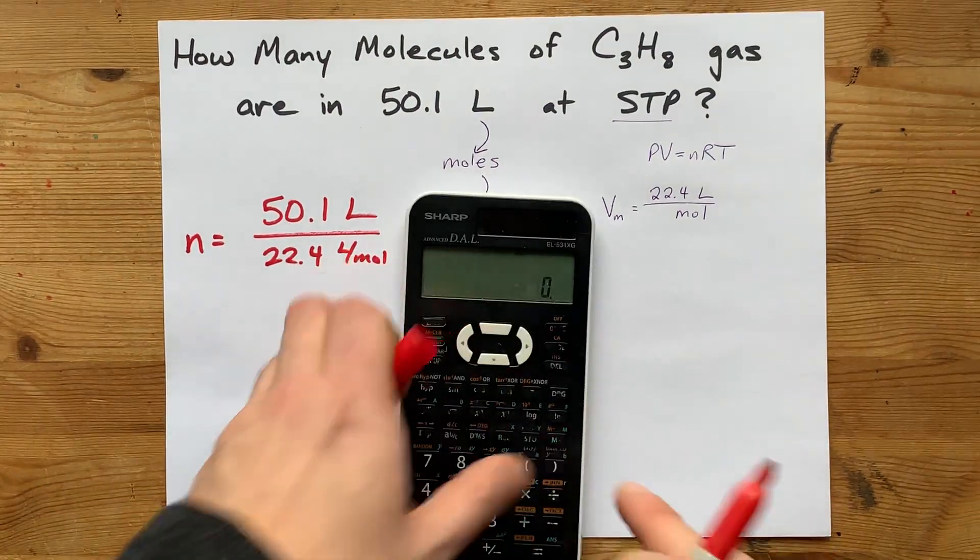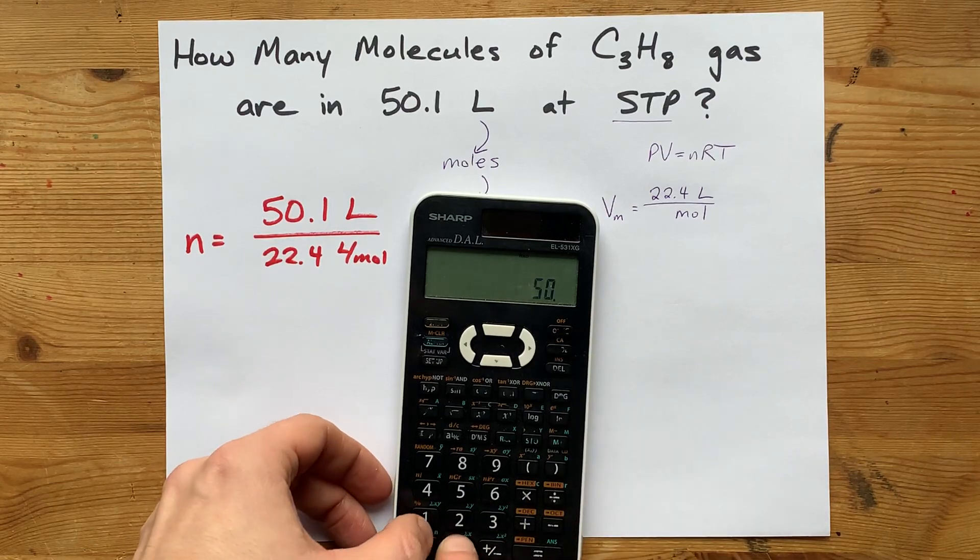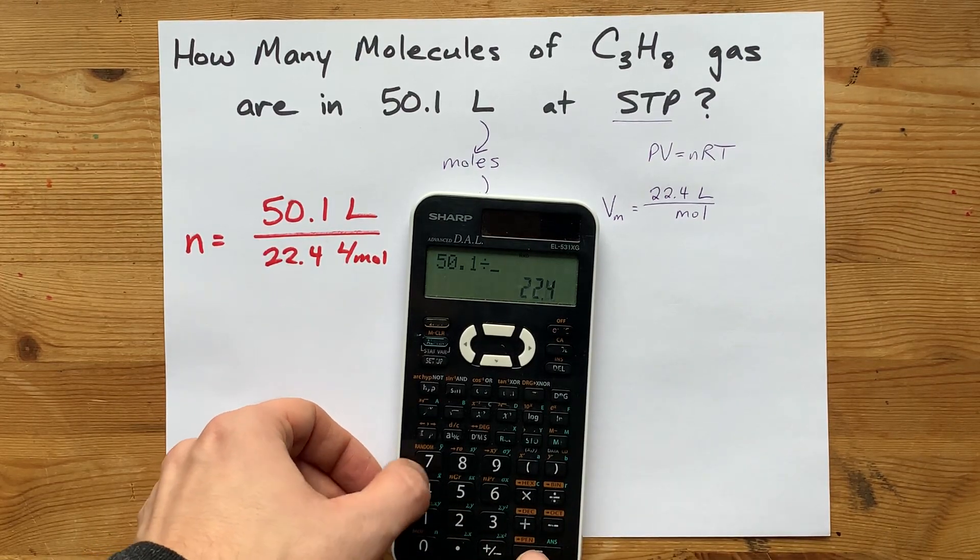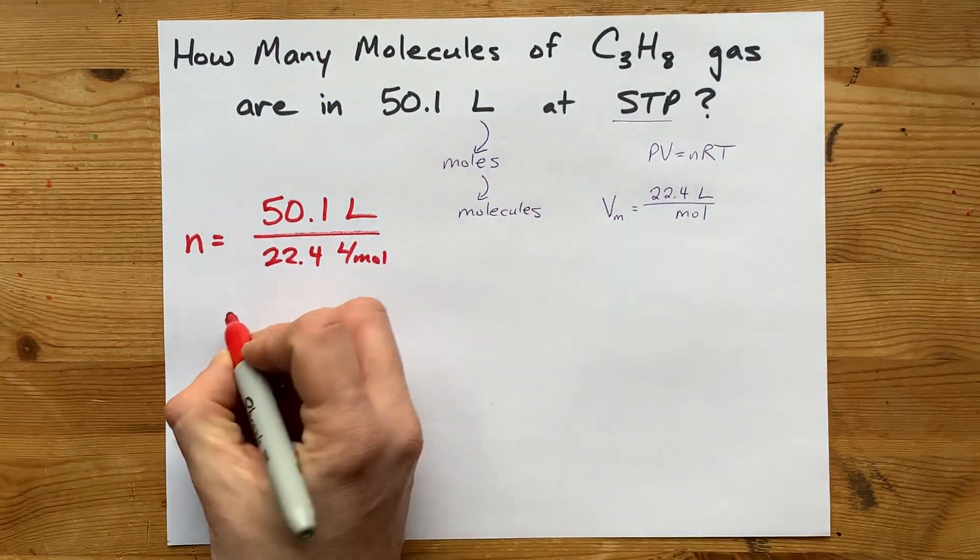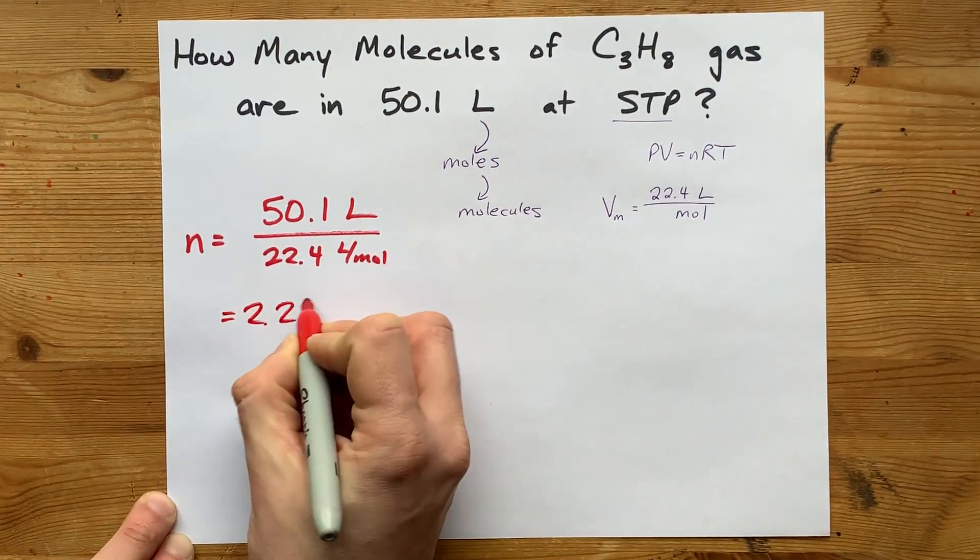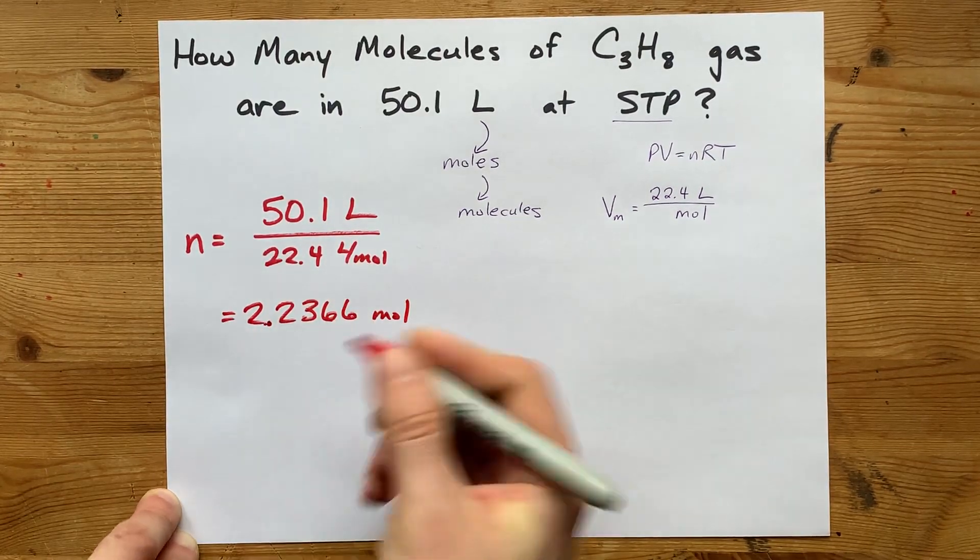you can divide liters by 22.4 liters per mole and end up with the number of moles. That's volume divided by molar volume. On my calculator, I'm going to do 50.1, and divide it by 22.4. That gives me 2.2366. Now, that's the number of moles of gas that I have.